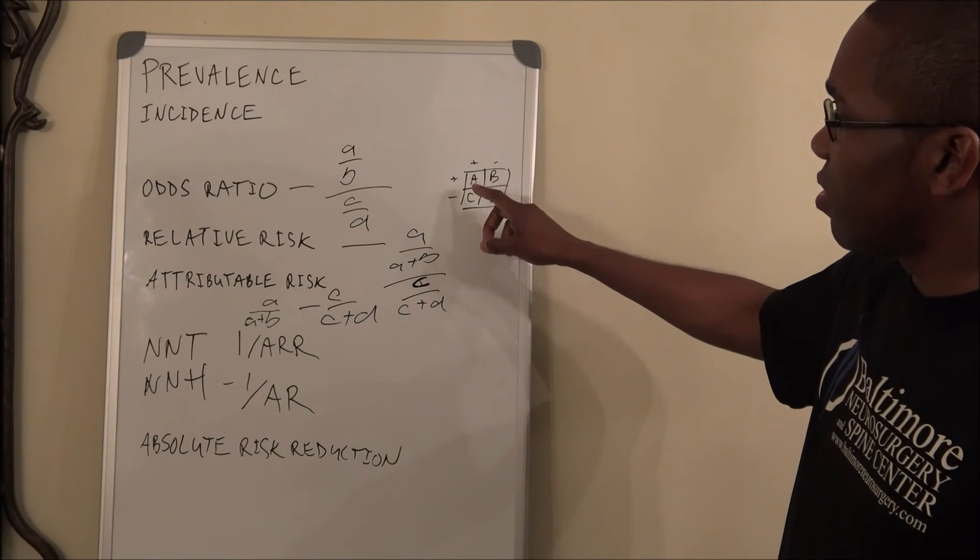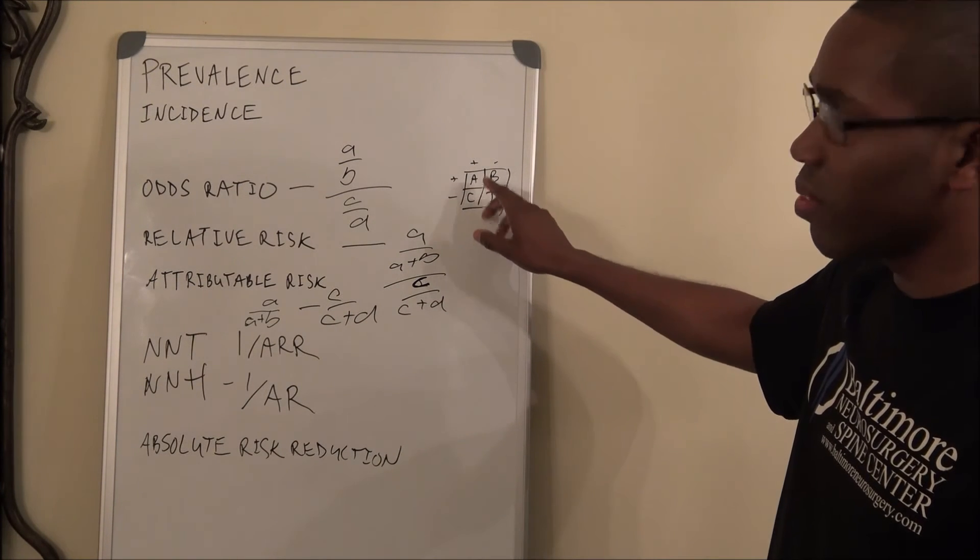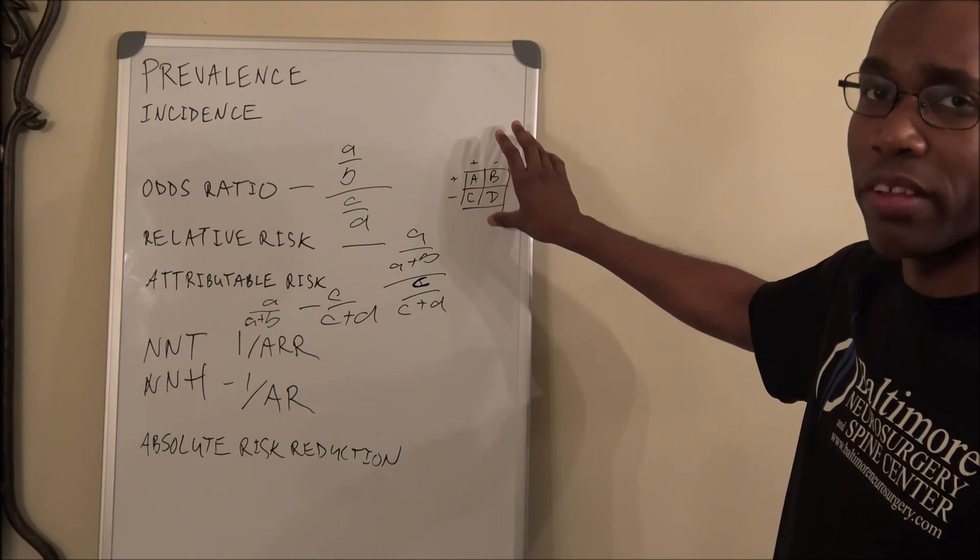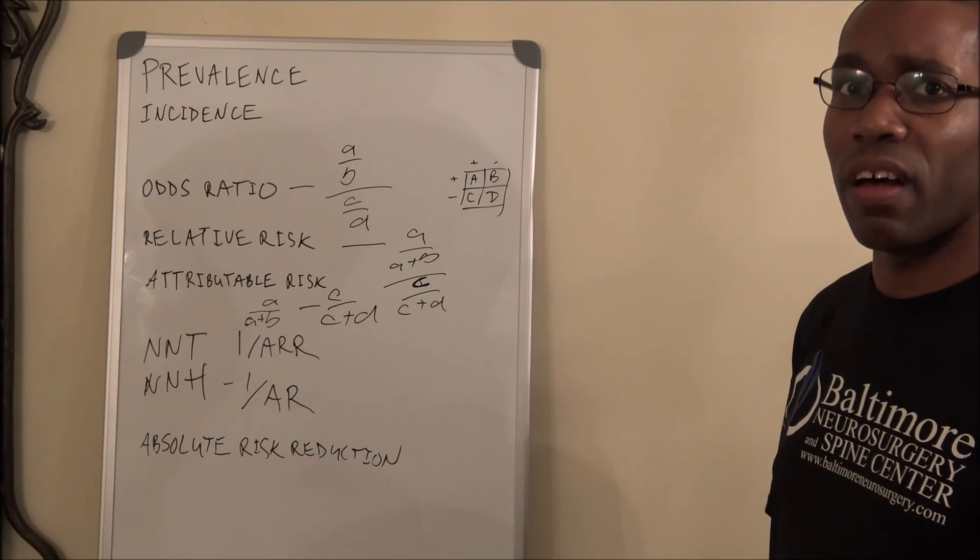And the letters correlate to the Punnett square, your two by two square, that we talked about in the other video.